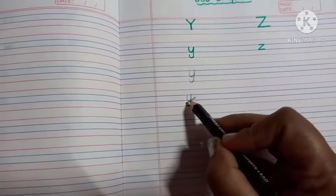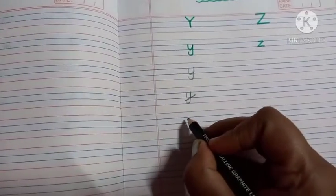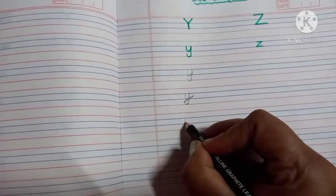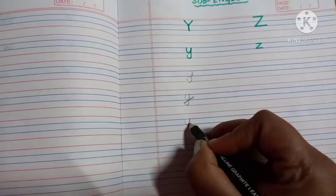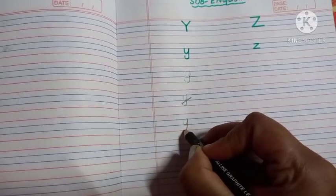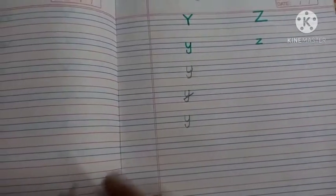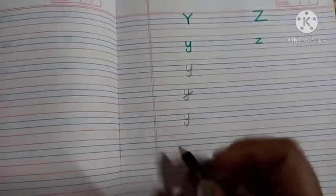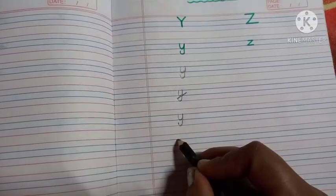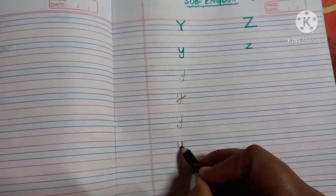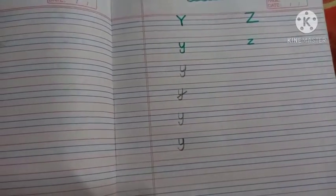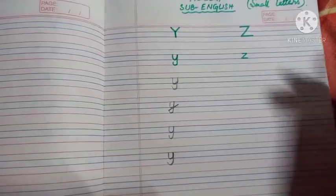You can cross this line as you wish. At first, draw a small letter U, then draw a standing line downwards with a small curve, and it will become the small letter Y. This is also very easy. This is the small letter Y.